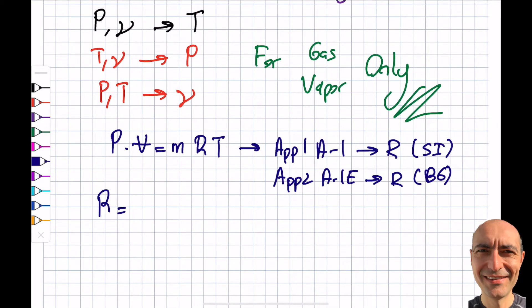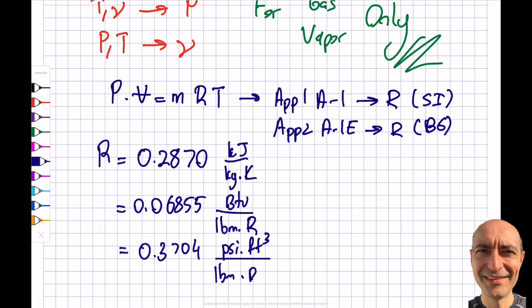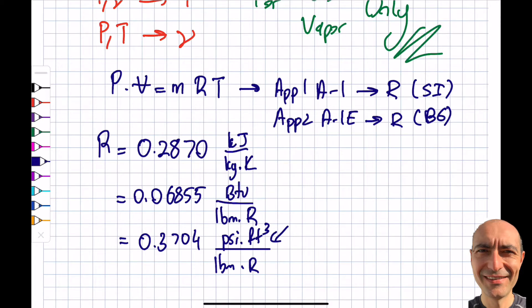I will actually give you a couple examples for R that we use day-to-day. Let's take air. We most likely will use the ideal gas law that we are doing now, plus we're probably going to correct it by using the compressibility factor. So this is 0.2870 kJ/(kg·K). Or I can write it equivalently: 0.06855 BTU/(lbm·°R) or 0.3704 psi·ft³/(lbm·°R).